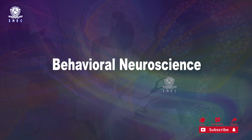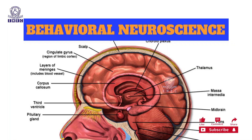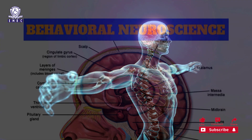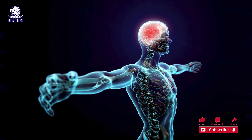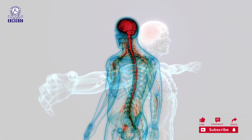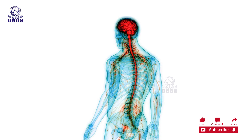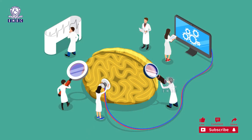The next branch is behavioral neuroscience, associated with biological psychology and neuropsychology. This subfield of psychology mainly examines how the brain and nervous system as well as other biological processes determine the behavior of an individual. Behavioral neuroscientists consider how our bodies influence our behavior.